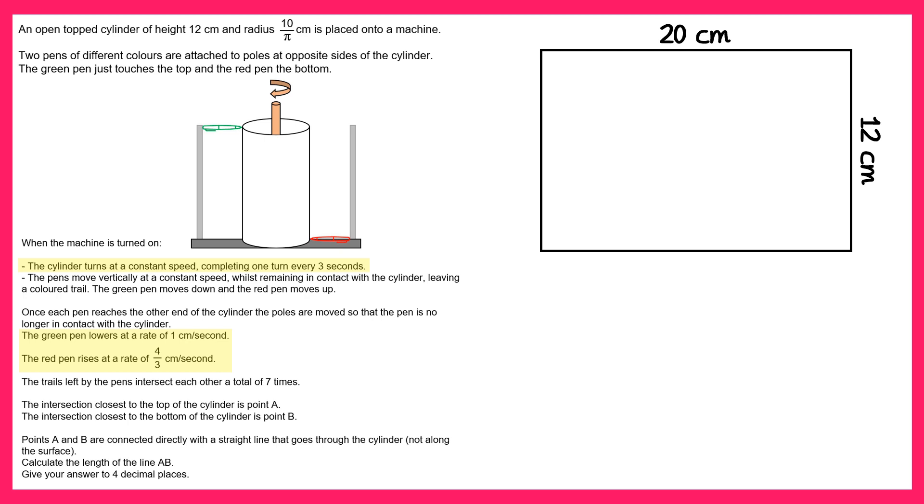So the trail for the green pen begins at the top of the rectangle. You can start it anywhere along the top of this rectangle. I'm going to go for the top right corner, here. And we know that the cylinder is going to do four rotations so this trail will go across the cylinder four times. Something like this.